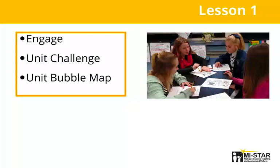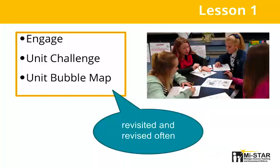Let's take a closer look at each lesson and how they progress from one to the next. Lesson one engages students in a discussion of protecting objects from forces by first witnessing their teacher being injured by a heavy object — which requires some acting on your part — then designing a way to protect a paper person from being crushed. After the anchoring experience and reading through the unit challenge, students construct a unit bubble map of questions which need to be answered to successfully complete the unit challenge. The unit bubble map should be revisited and revised often.